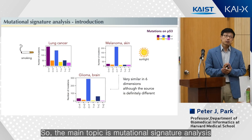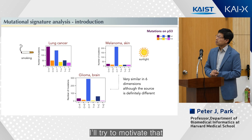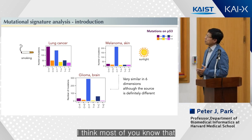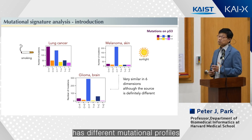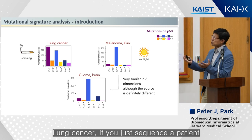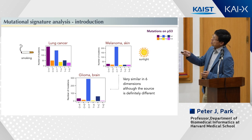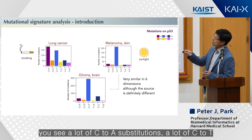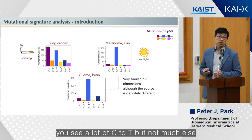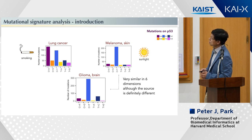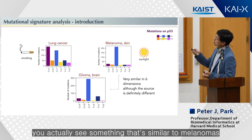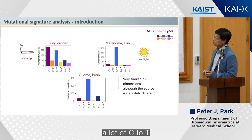The main topic is mutational signature analysis. I'll try to motivate that by giving you some examples. Most of you know that lung cancer and melanoma have different mutational profiles. If you sequence a patient with lung cancer, you see a lot of C to A substitutions and a lot of C to T's. If you sequence melanoma samples, you see a lot of C to T but not much else. If you sequence gliomas, you actually see something similar to melanomas — a lot of C to T.